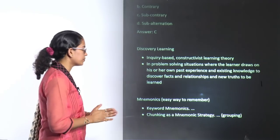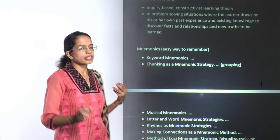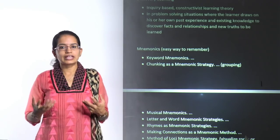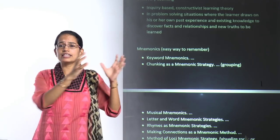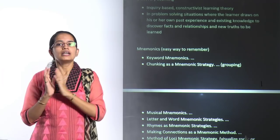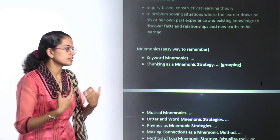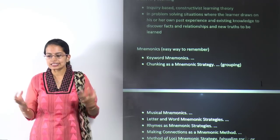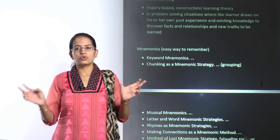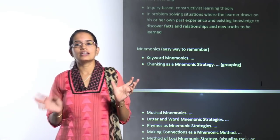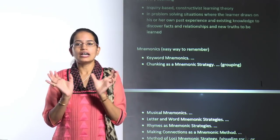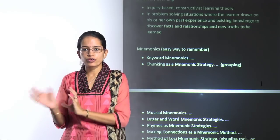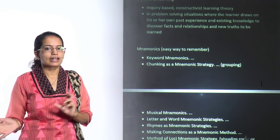The next question was on mnemonics and types of mnemonics. Mnemonics is simply an easy way of remembering things. One way is giving something a different name you can remember easily — that's keyword mnemonics. The next is chunking: rather than remembering a phone number as a whole, you divide it into chunks of 4, 2, or 5, and so on.